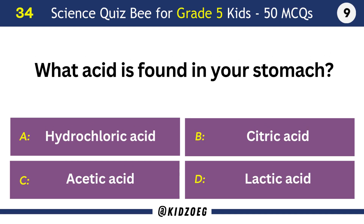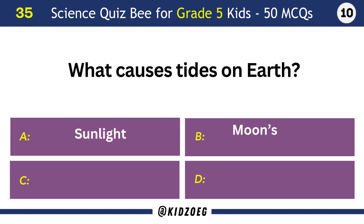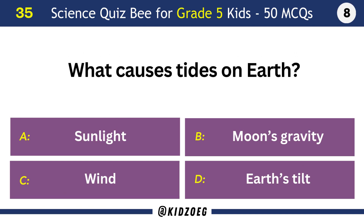What acid is found in your stomach? Hydrochloric acid. What causes tides on Earth? The Moon's gravity.